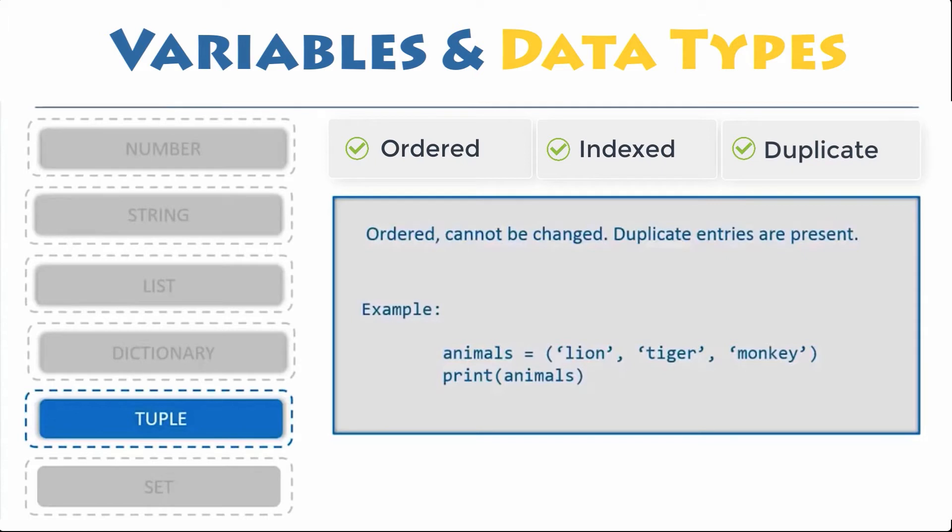The important difference between a list and a tuple is that tuples are immutable. Tuples, once created, cannot be modified. Tuples are used to write protect data and are usually faster than list as it cannot change dynamically.